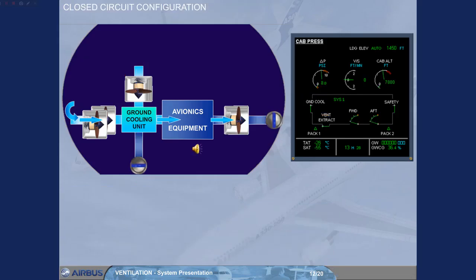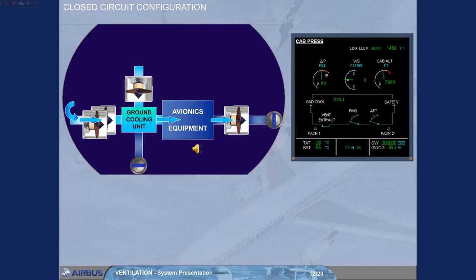On the ground with all engines running, or on the A340-600 with engines 2 and 3 running, or in flight, the ground cooling unit and the fan are stopped. The ground cooling valve is closed. In addition, the overboard extract valve is closed, and the air from the avionics equipment is blown through the underfloor extract valve, under the forward cargo compartment, then overboard through the forward outflow valve.